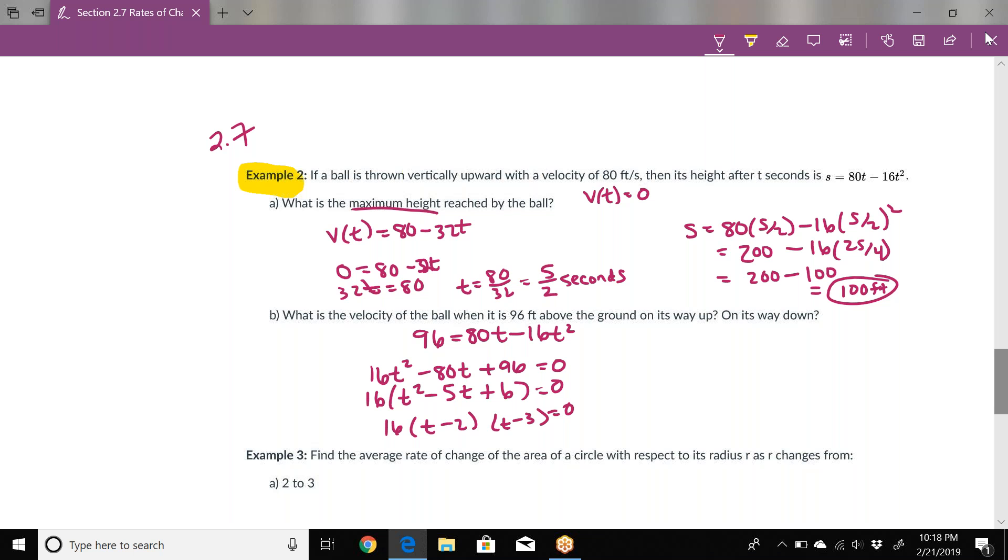So t = 2 and t = 3, in seconds. This means that in the position function, when we put 96 in for feet above the ground, there were two places where our position was at 96 feet.